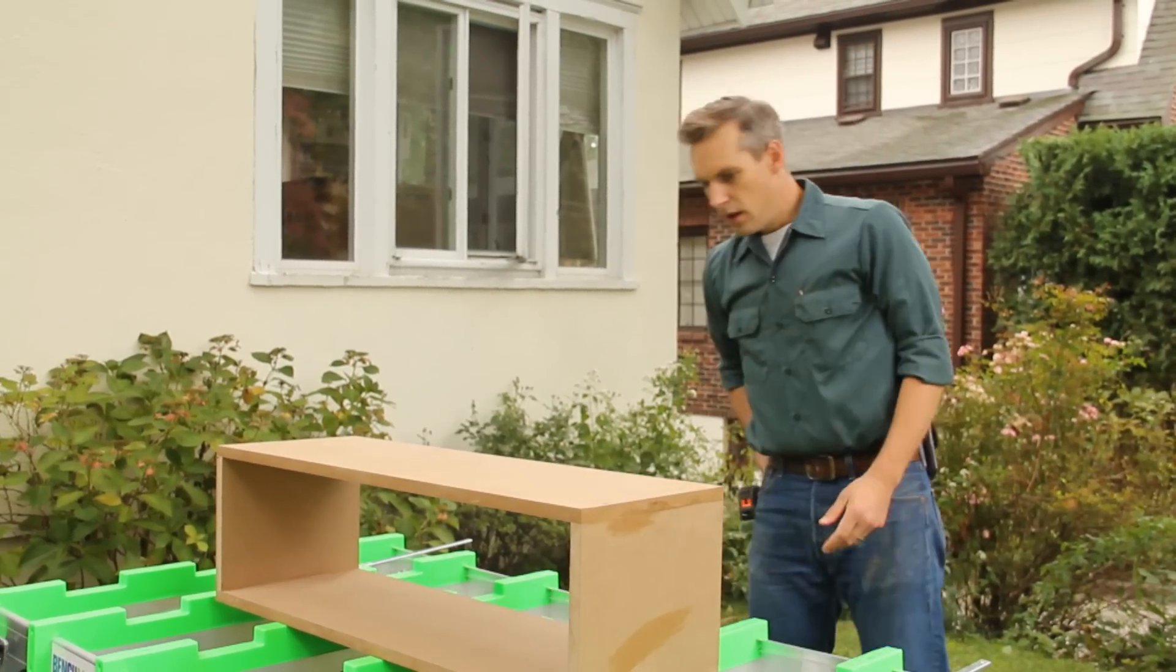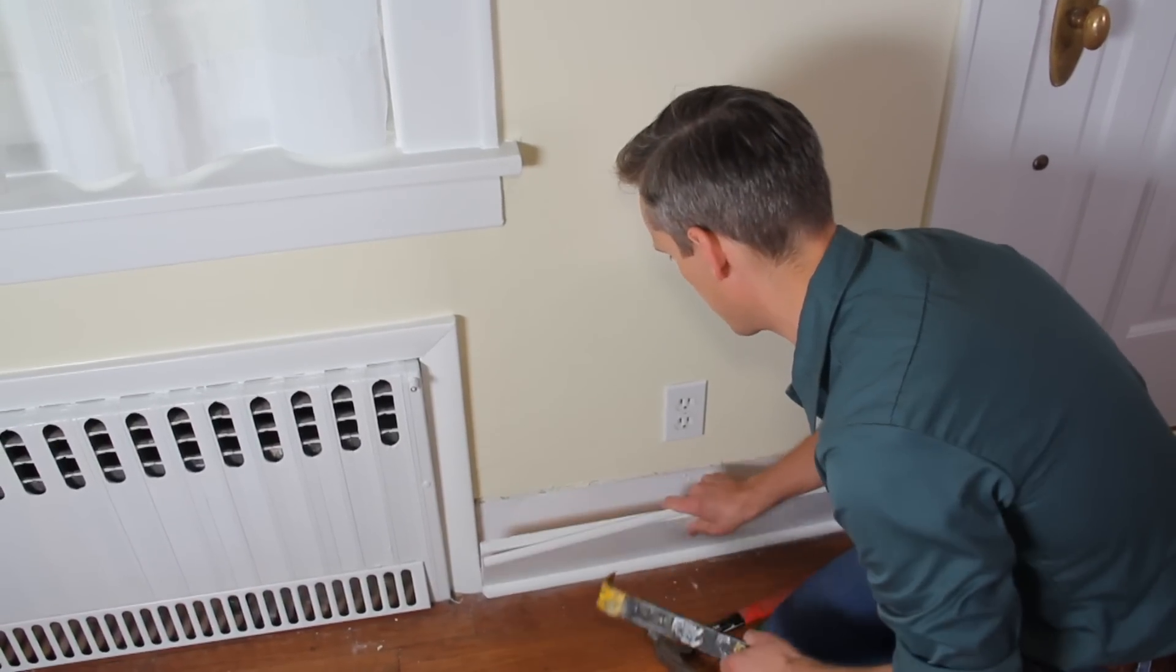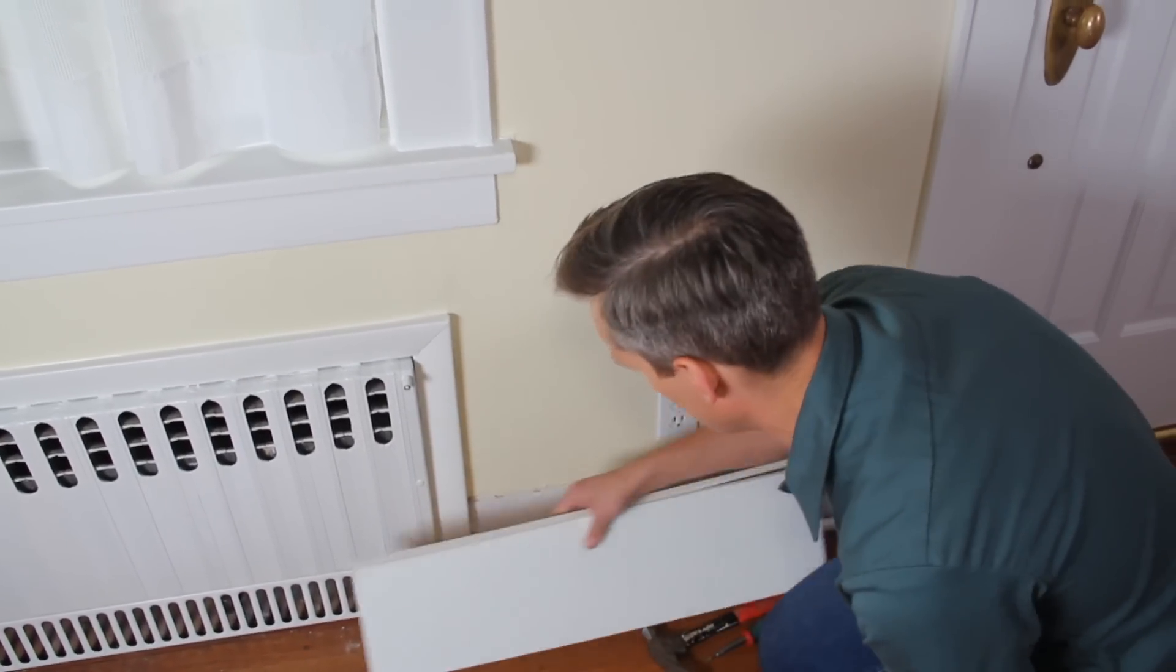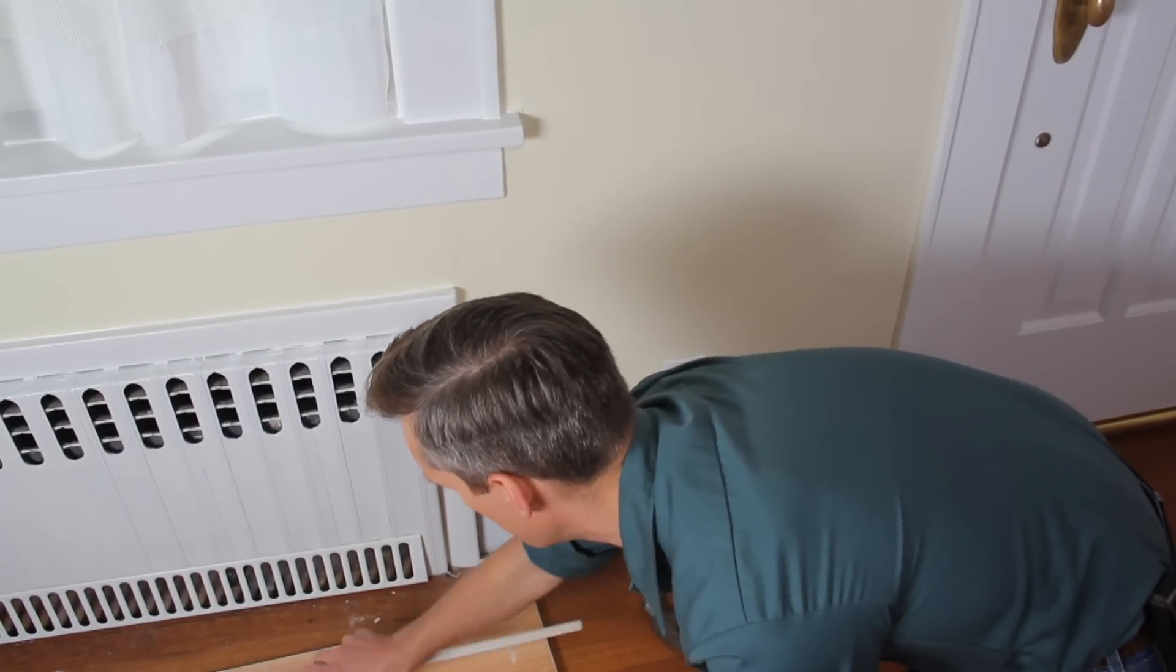Now that you'll be working inside for a while, the first step is to pry off the baseboard molding where the divider meets the wall. If there are any receptacles that would get buried, try this little trick.